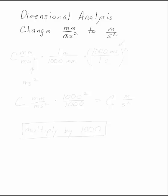To change millimeters per millisecond squared to meters per second squared, we want to take whatever we started with, whatever number we had, some constant, and multiply it only by values that would be the same as 1.